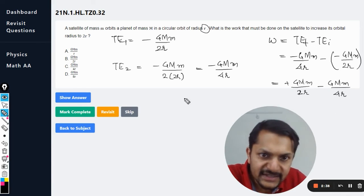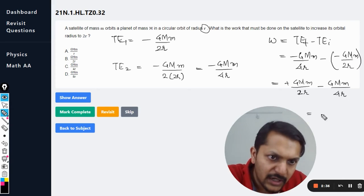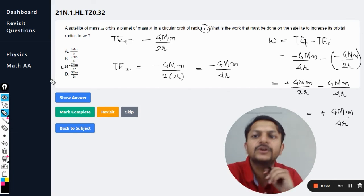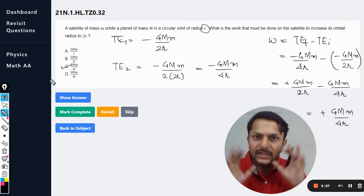And this comes out to be positive GMm by 4r, so the answer will be C. This is how we do this question.